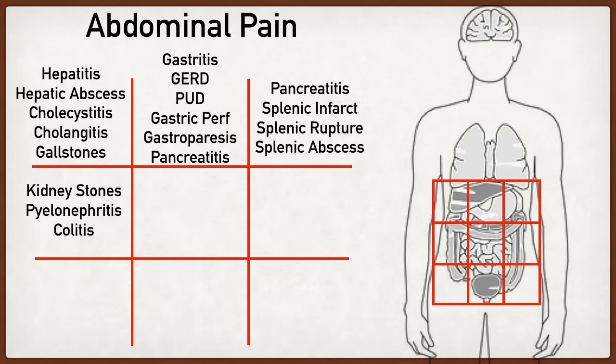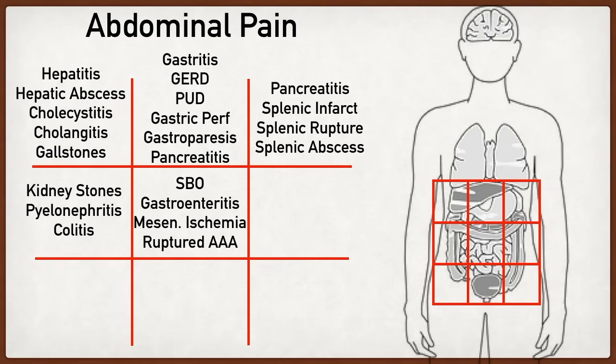Traveling over to the umbilical region, several structures are located here including the transverse colon, the bulk of the small intestine, and the aorta. You may see things like small bowel obstruction, gastroenteritis, mesenteric ischemia — when the intestines aren't receiving enough arterial blood flow or oxygen — and problems with the aorta such as abdominal aortic aneurysm, especially if it ruptures.